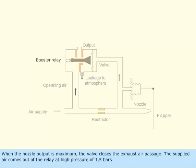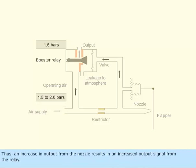When the nozzle output is maximum, the valve closes the exhaust air passage. The supplied air comes out of the relay at high pressure of 1.5 bars. Thus, an increase in output from the nozzle results in an increased output signal from the relay.